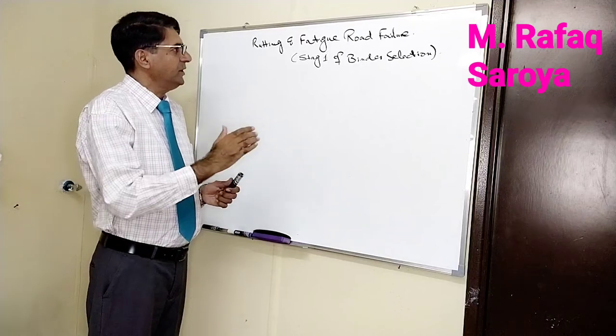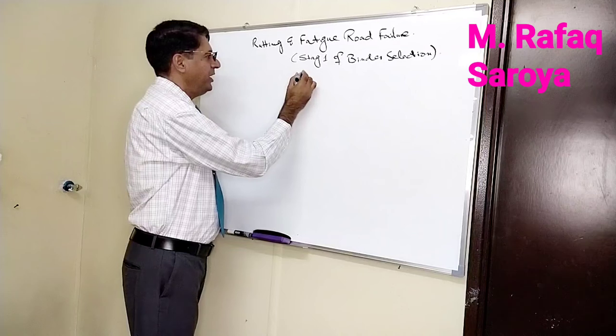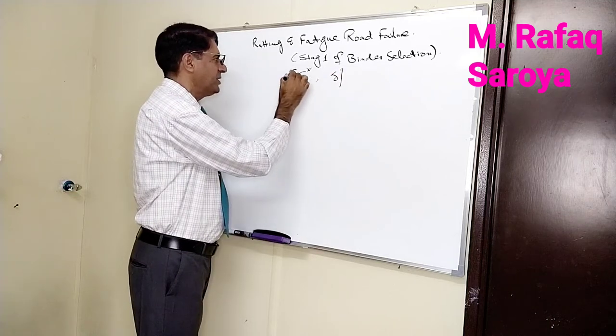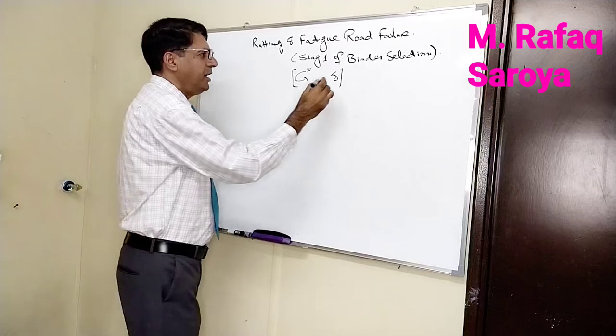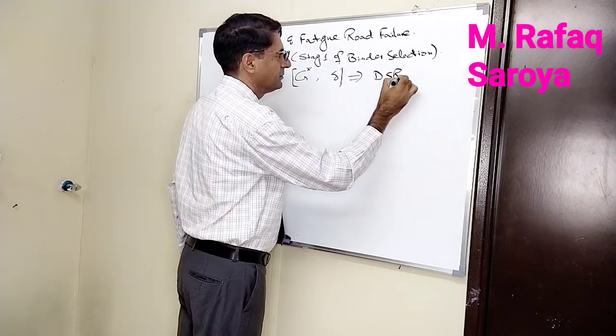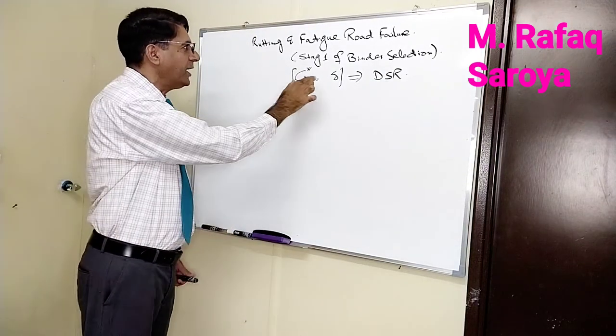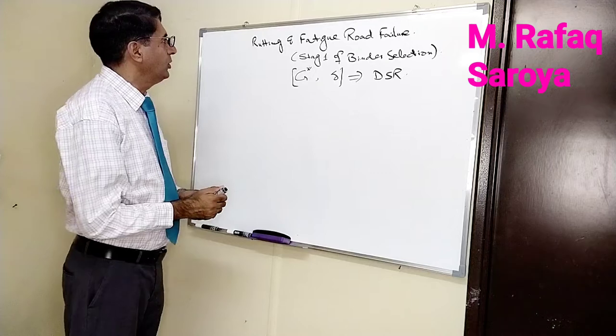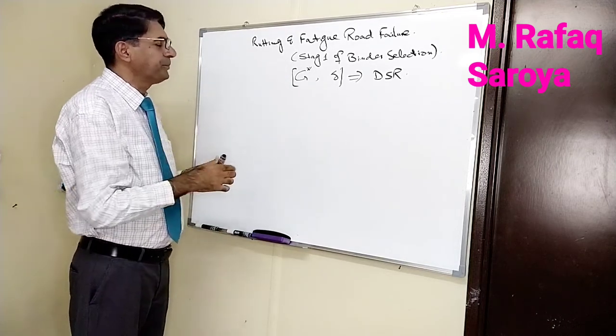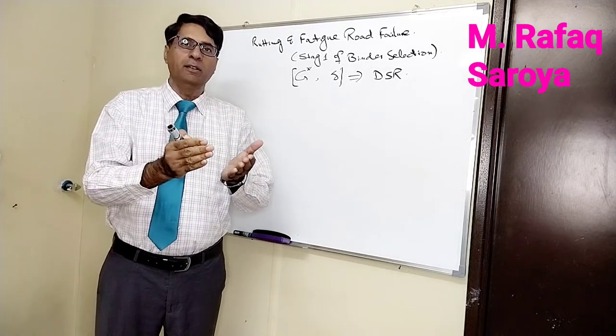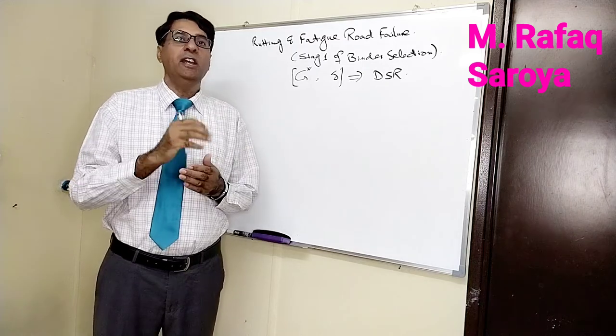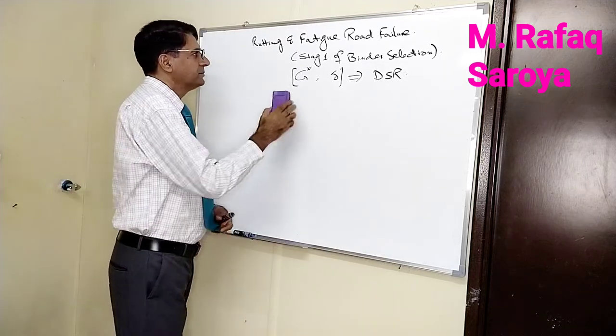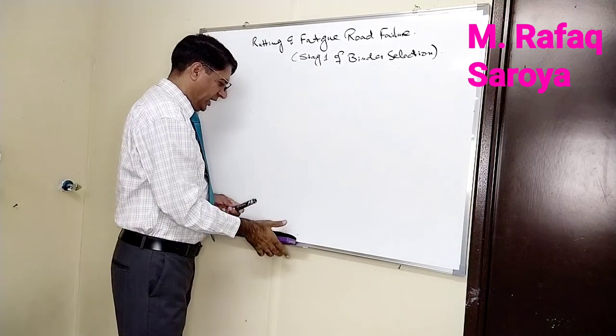In my previous lecture, I explained the g star complex shear modulus and the phase angle. These two parameters are determined by DSR method and are factors related to rutting and fatigue cracking. Today we will explain which factor is responsible for the study of rutting and which relationship is used for the study of fatigue cracking. First, we will explain the rutting factor.